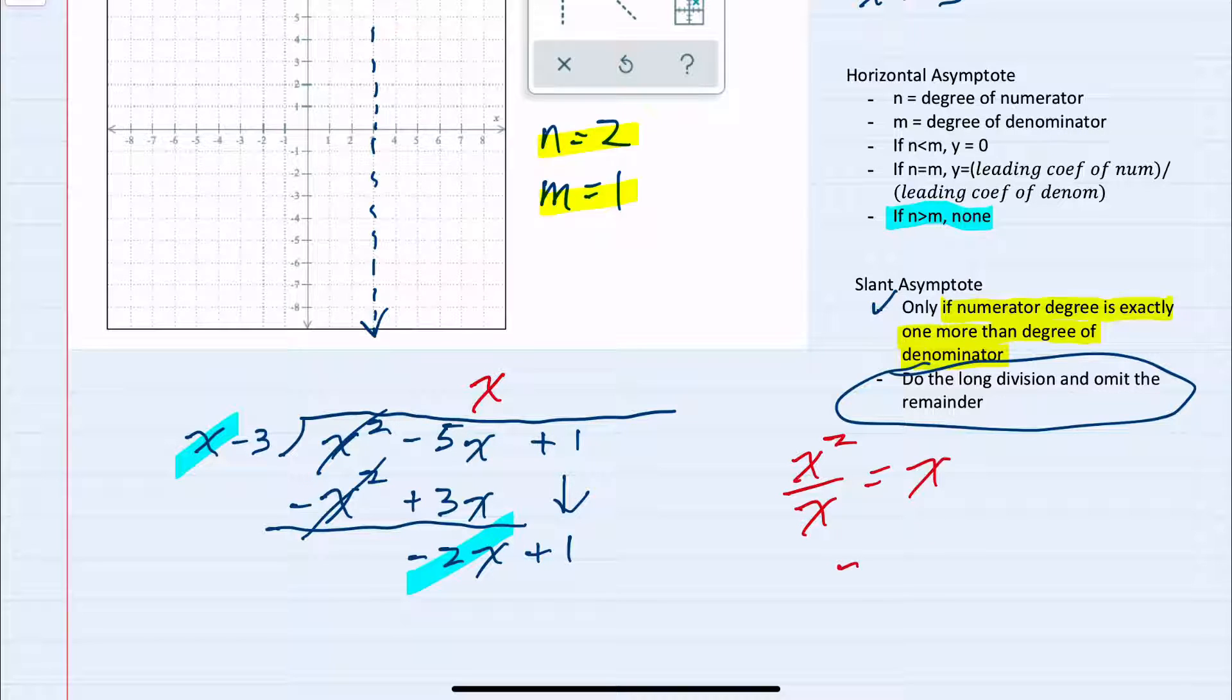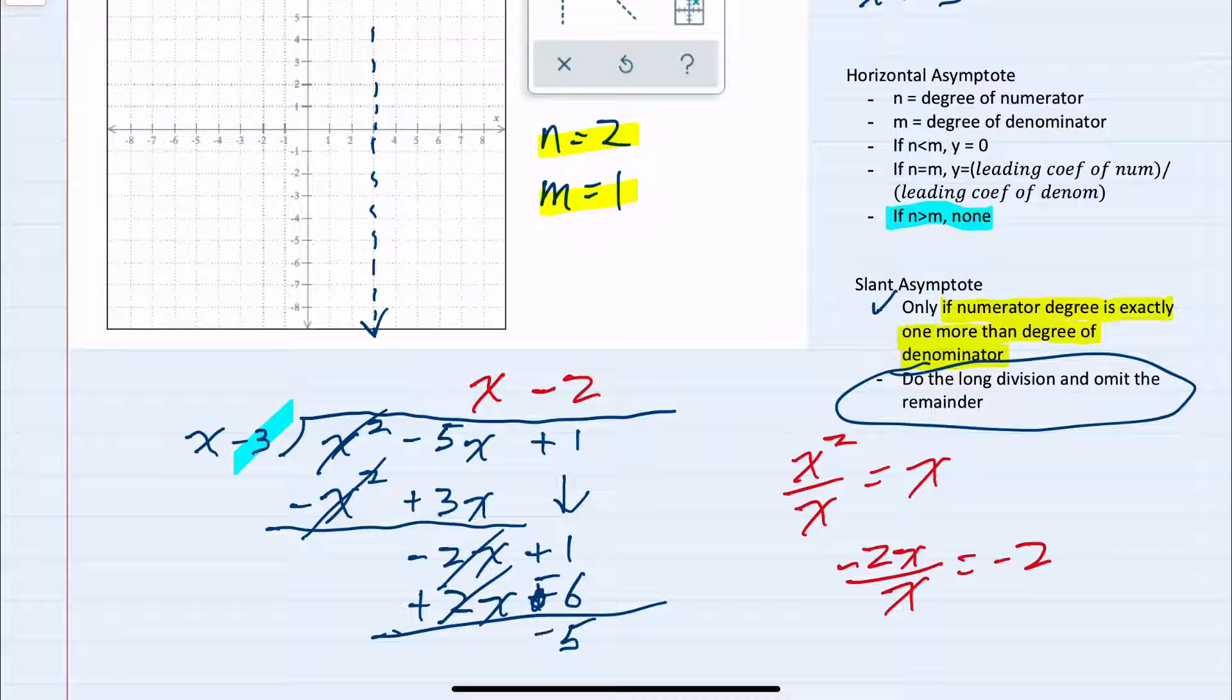Looking at the first terms, I have minus 2x divided by x, which gives me minus 2. So putting that in the top, I again multiply: minus 2 times x gives me minus 2x, and minus 2 times minus 3 gives me plus 6. Changing the signs and adding cancels again and leaves me with minus 5. If I were to write this remainder, it's minus 5 in the numerator and x minus 3 in the denominator. As we plug in extreme values for x, both positive and negative, this is always going to be moving towards 0. Our slant asymptote is going to be x minus 2.